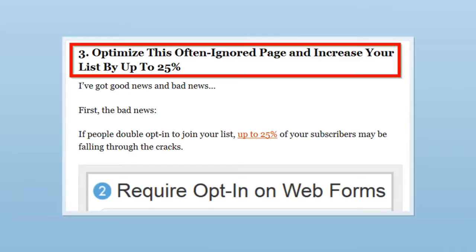For example, in my list building post, I use benefit-rich copy in almost every subheading. Instead of a bland subheading like focus on your thank you page, I put the benefit front and center.